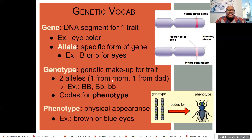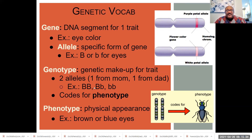Just to kind of review: a gene is a specific group of — basically a protein sequence that denotes for a certain trait. And an allele is a specific form of the gene. Genotype is genetic makeup, and phenotype is physical appearance — what it looks like.